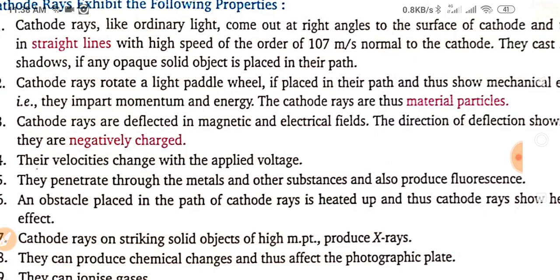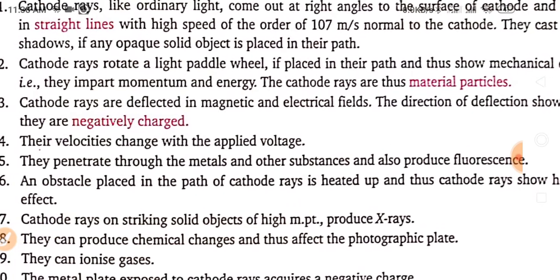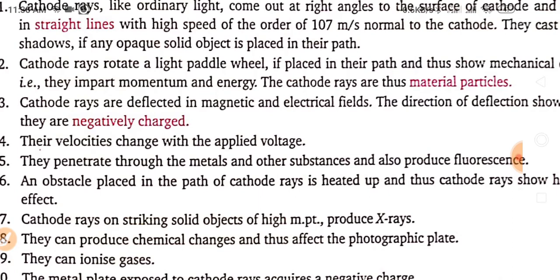Cathode rotate a light paddle wheel if placed in path and thus show mechanical effect. That is they impart momentum and energy. If you put a paddle wheel in their path, they will start to rotate. This means they have the capacity to impart momentum and energy. The cathode rays are thus material particles.